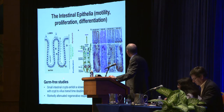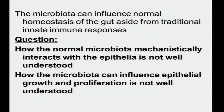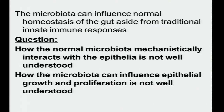Differentiation can go into various cell types: absorptive, goblet cells that secrete mucins, endocrine, and Paneth cells. Germ-free studies over decades have shown that small intestinal crypts show slower turnover of epithelial cells, with the crypt-villus transit time doubling, indicating at least some enhancing role of the microbiota in these processes. It's also been shown there's markedly attenuated regenerative responses to colonic injury, implying roles in restitution.